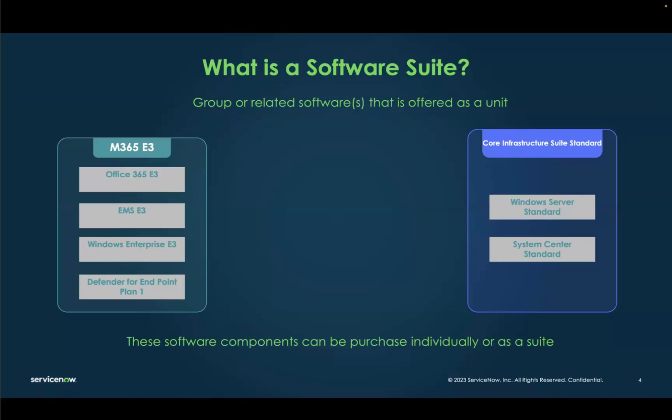Microsoft offers M365E3 as an example, which is a suite of Office, EMS, Windows Enterprise, and Defender for Endpoint. It also offers server software suites like Core Infrastructure Suite, which is a combination of Windows Server and System Center software. These software components can be purchased individually as well, or as a suite, but organizations purchase suites because of the cost efficiencies they provide.